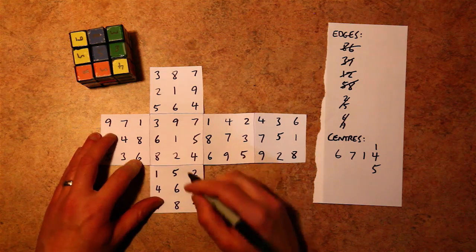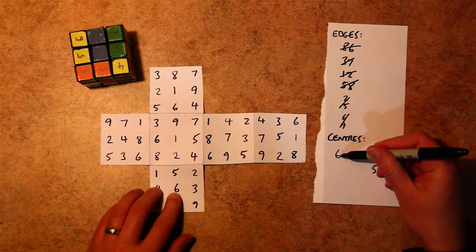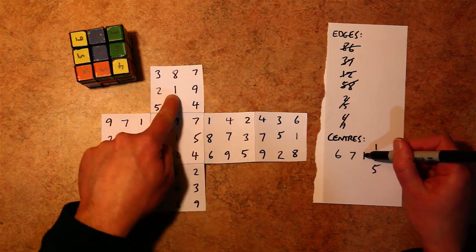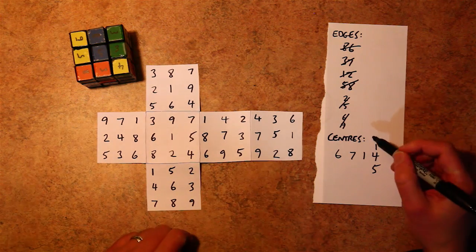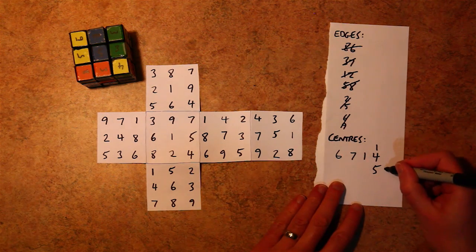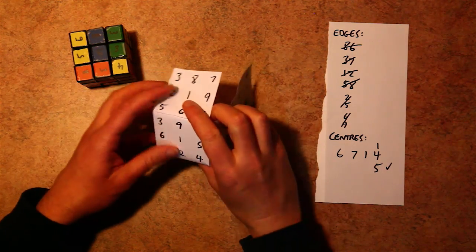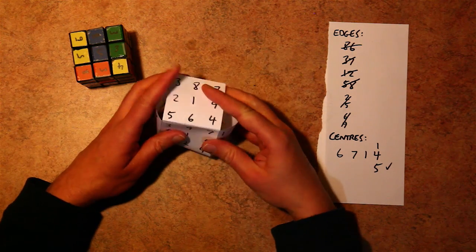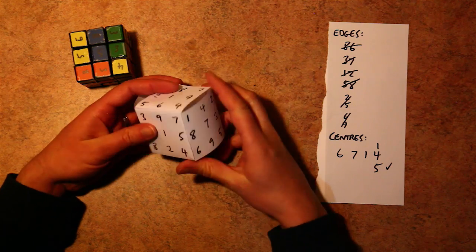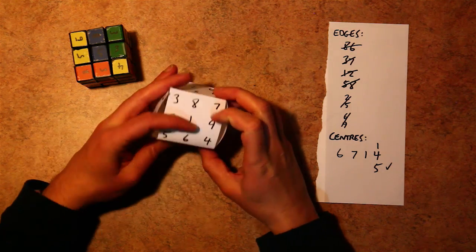You go through and figure out where the numbers match. There's only one choice for each face. So basically at this stage, you write them down. And as long as those numbers match the actual numbers on the centers of your faces, then you know you have a valid solution.